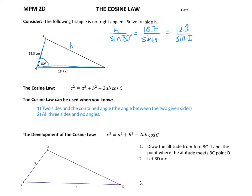Before we do that, notice a couple of things with the formula. I've used the letters A, B, and C, but you could use any letters you want. The key is whatever letter you use for your triangle, the angle at the end has to be the angle across from the side that is by itself on the left side.